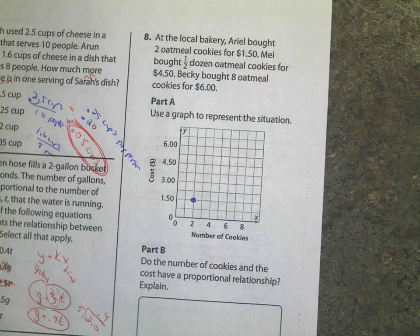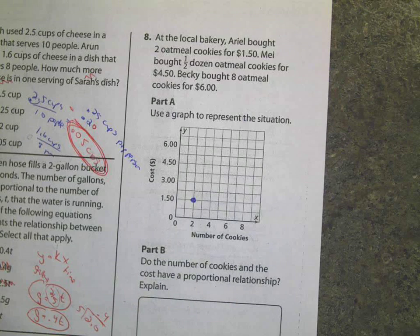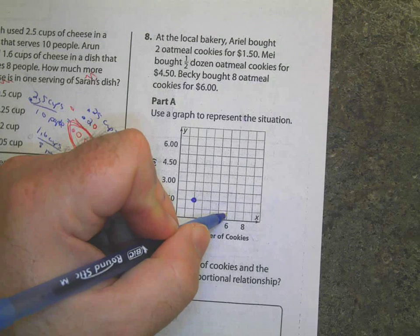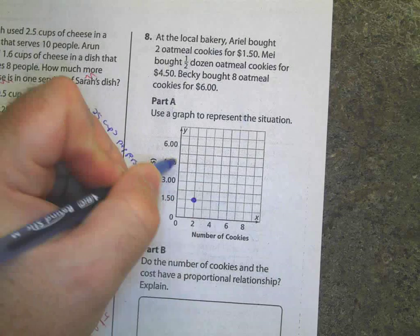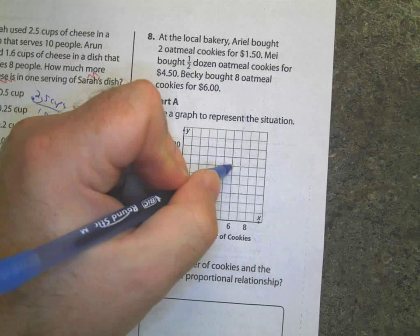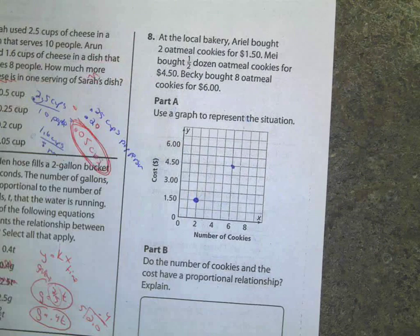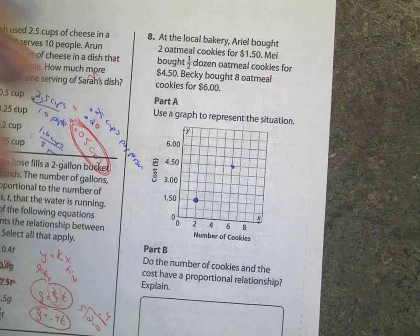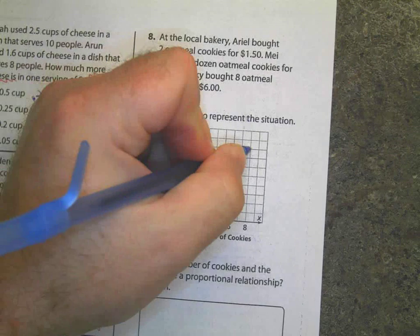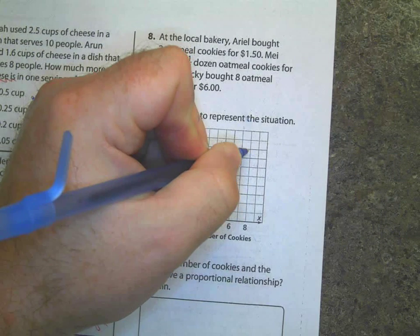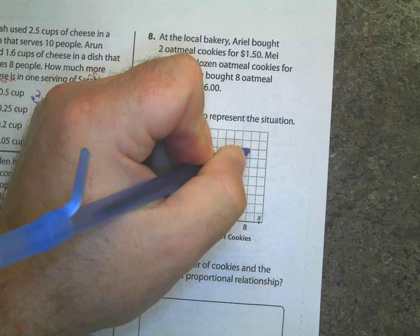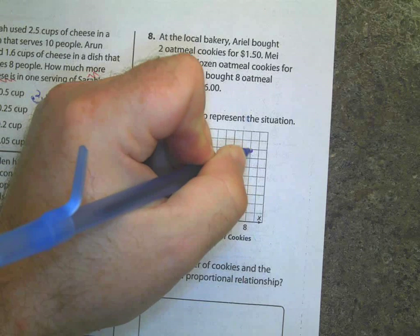Then it says, Mel bought a half a dozen. Who can tell me how many are in a half dozen? Six. Six cookies, how much do they spend? $4.50. So I go up to $4.50, I go up to six, I put a dot right here. And last but not least, six bucks are going to buy me eight cookies. Six dollars is going to buy me eight. So now, I go put my dot at eight.